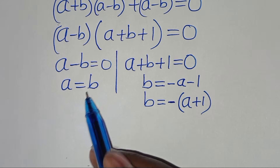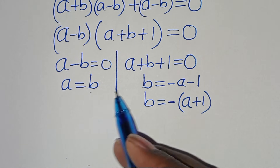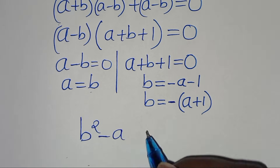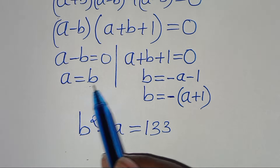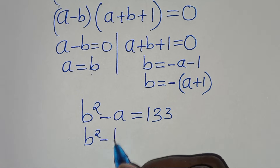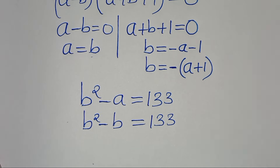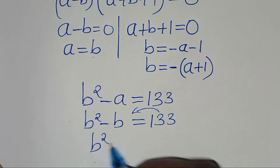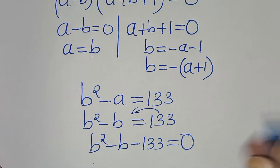Now in case 1, from the first part a minus b equals 0, we substitute a equals b into equation 2, which is b squared minus a equals 1/3. Substituting a equals b, we have b squared minus b equals 1/3. Taking 1/3 to the left-hand side gives b squared minus b minus 1/3 equals 0.